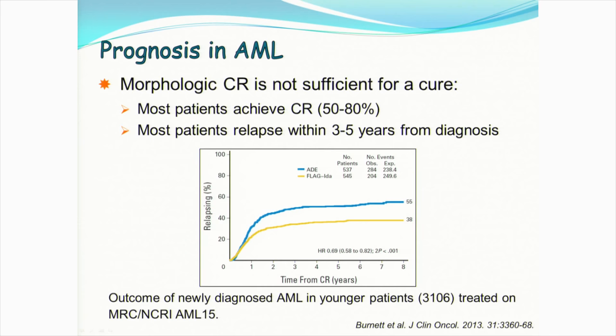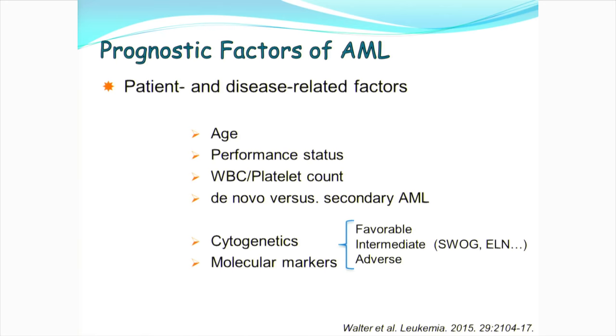The major obstacle to cure is disease recurrence. This AML15 study including more than 3,000 patients in younger patients shows that no matter what the initial induction therapy is, 40 to 50% of patients relapse. So morphologic CR is not a good predictor for relapse. We want to identify prognostic factors that can accurately predict relapse, so we can give additional therapy only to those patients who will relapse, and avoid unnecessary therapy on patients who will not relapse.